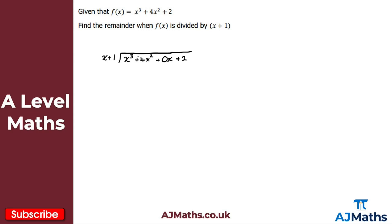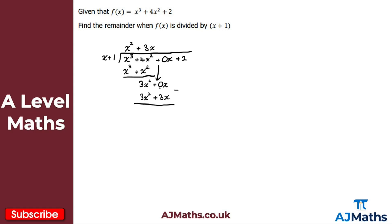With x plus 1 on the outside we begin: x cubed divided by x gives x squared. Multiplying x squared by the divisor gives x cubed and plus x squared. The x cubed terms cancel and 4x squared minus x squared gives 3x squared. We bring down the 0x placeholder — this is exactly why it matters — giving 3x squared plus 0x. Dividing 3x squared by x gives plus 3x. Multiplying 3x by x plus 1 gives 3x squared and plus 3x. The 3x squared terms cancel and 0x minus 3x gives minus 3x.